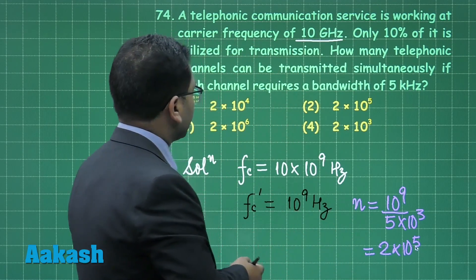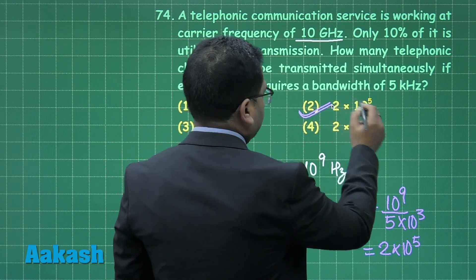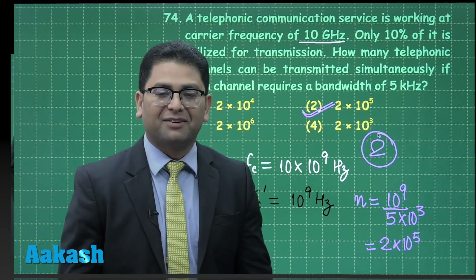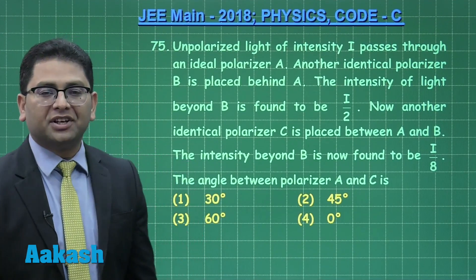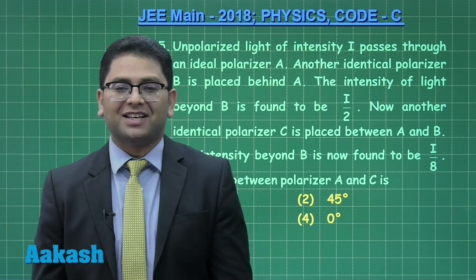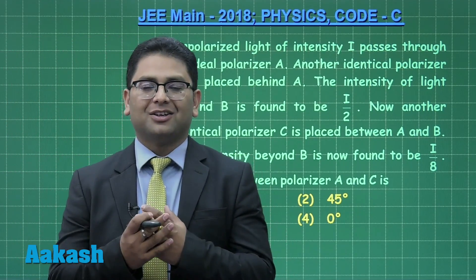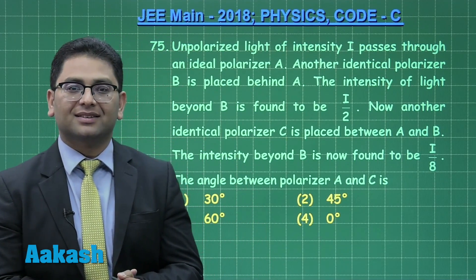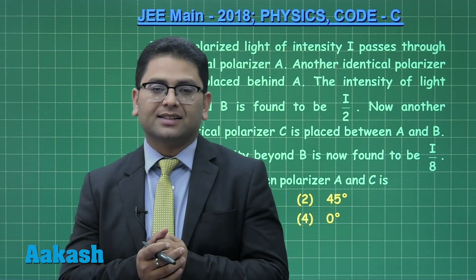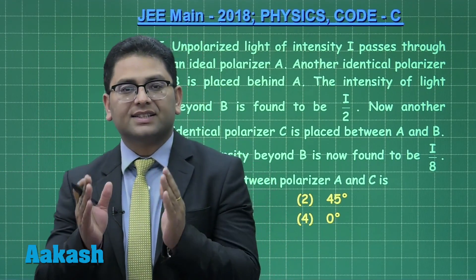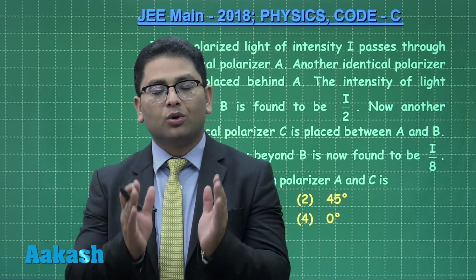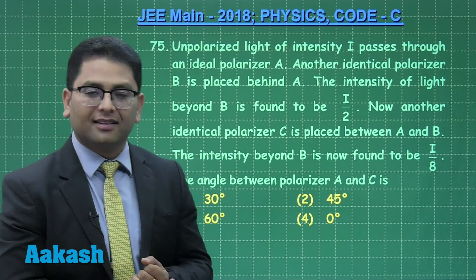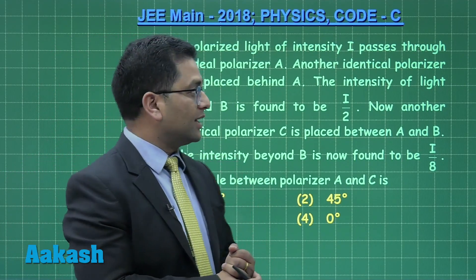So this many number of channels can be transmitted simultaneously under this given condition. The correct option for question number 74 is option number 2. Now let's move to question number 75 from wave optics, and the topic is polarization. Again, polarization is a topic which is there only in JEE Mains. Those 5 or 6 chapters which are specifically only in JEE Mains need to be focused for any future aspirant.